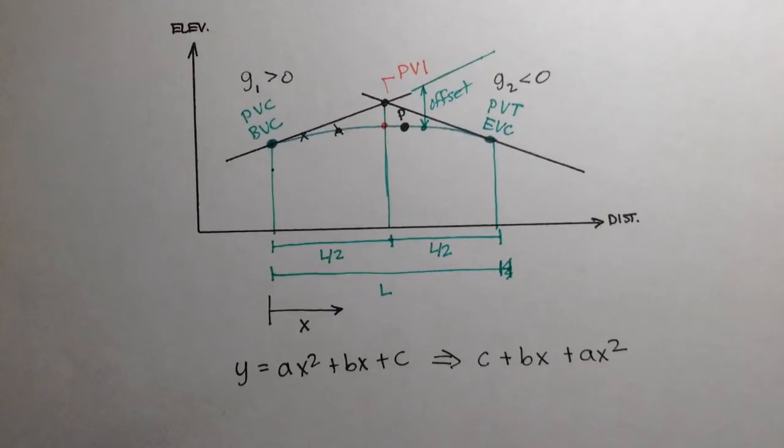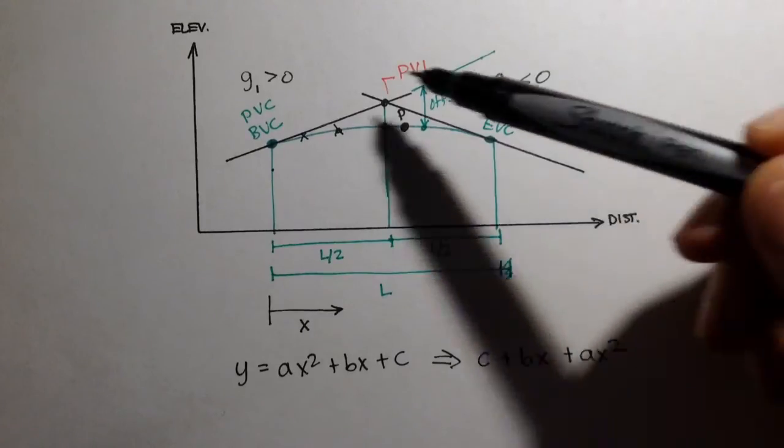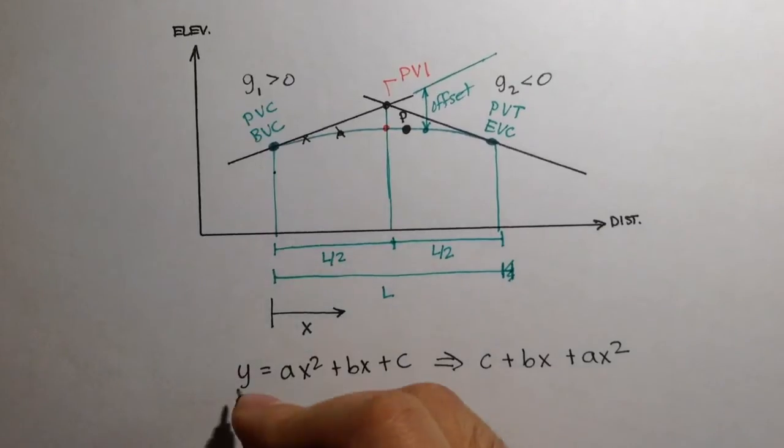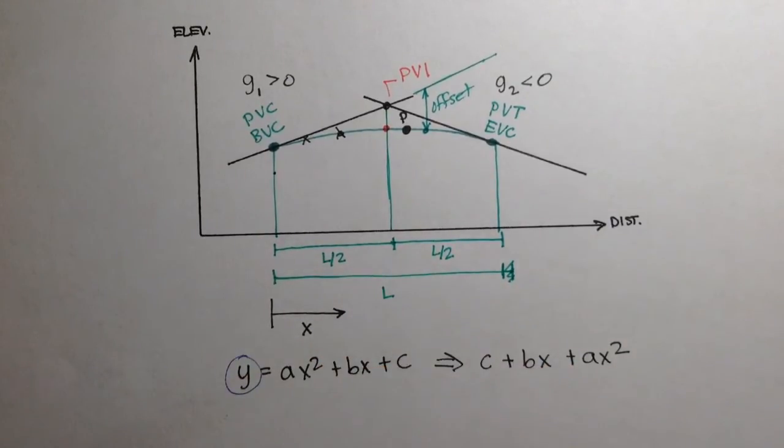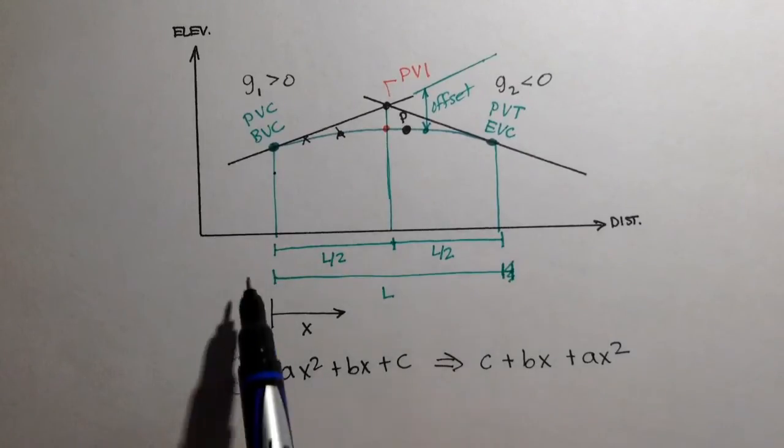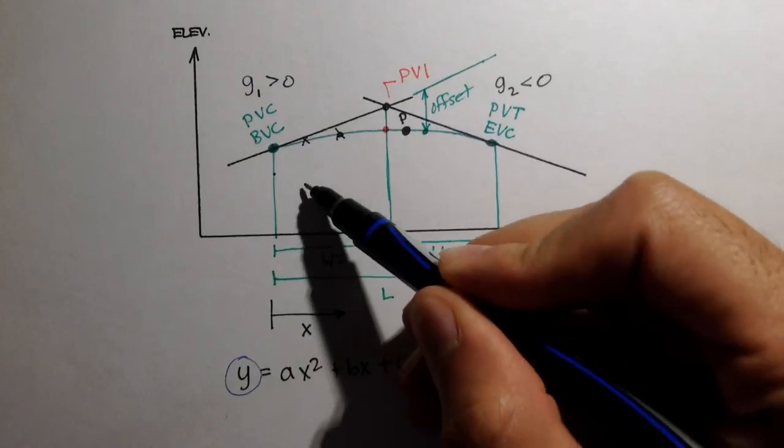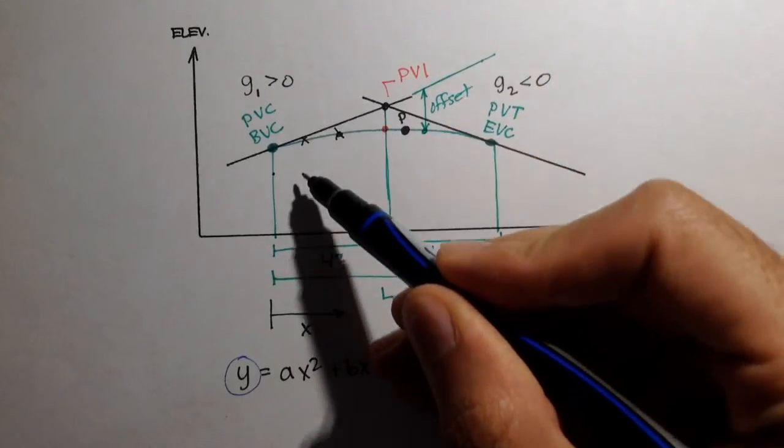So let's actually go through this equation and see how the terms and variables relate to the parameters and the characteristics that we discussed in the previous video. So let's start off with y. If you think about just a regular parabolic curve on a simple Cartesian coordinate system where you have your x and y axis, y is simply the value from the x axis to any point going up.